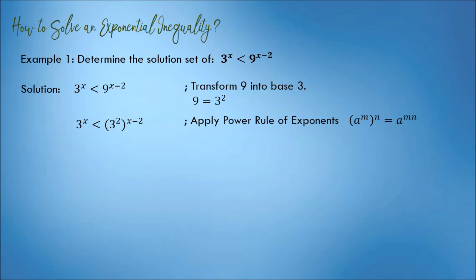Next, apply the power rule of exponents. Multiply 2 to x minus 2.